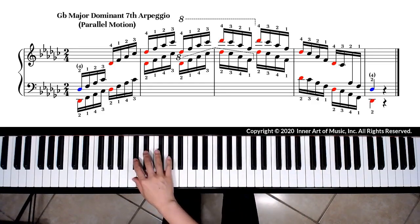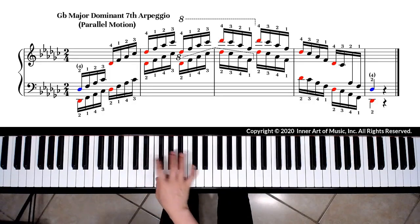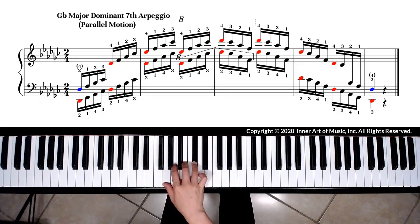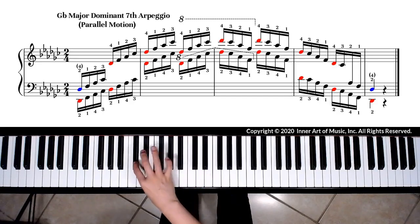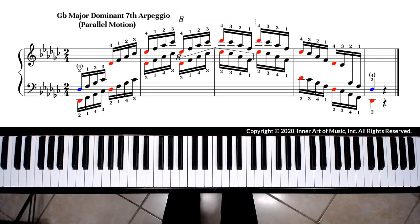There is another option of fingering for right hand. Finger 2 can be used to play the Db note at the beginning and ending of the arpeggio. You may see on the screen that I marked the notes with optional fingerings with blue.